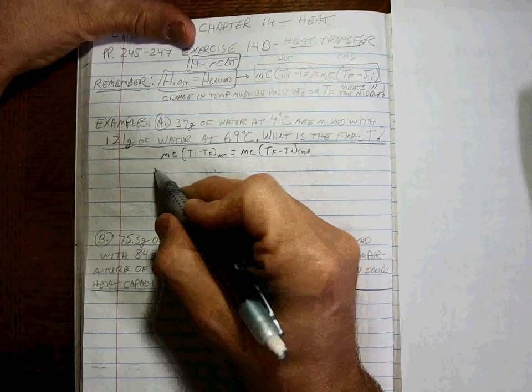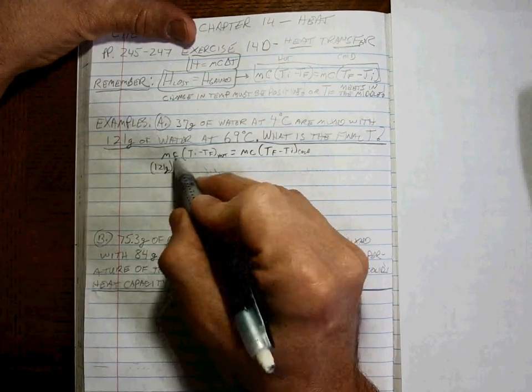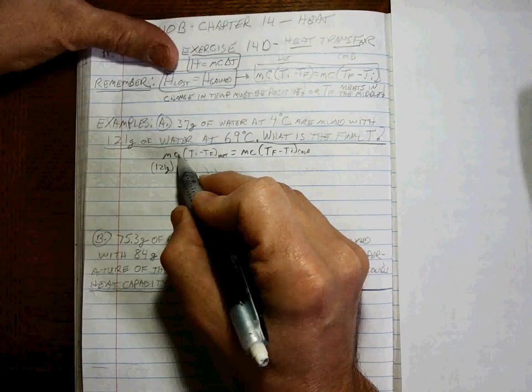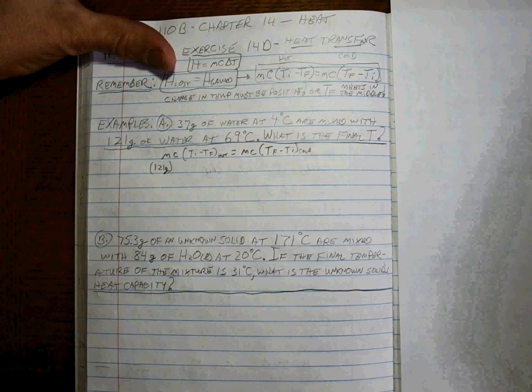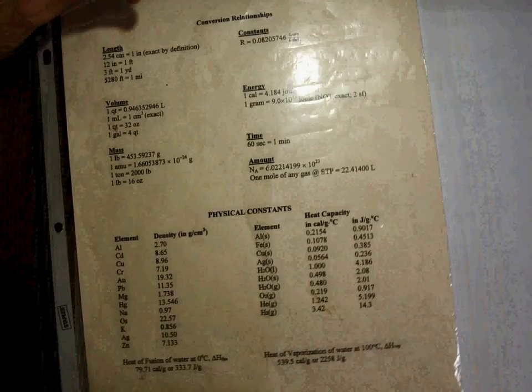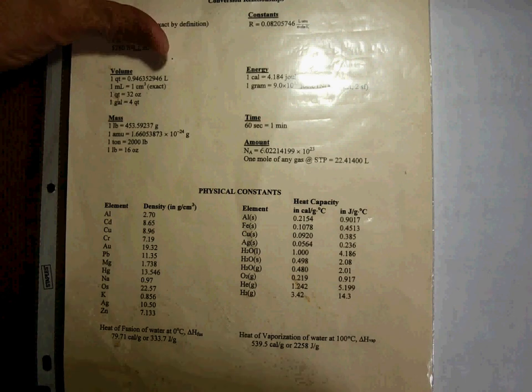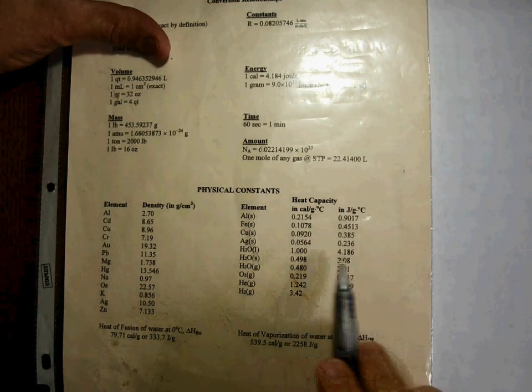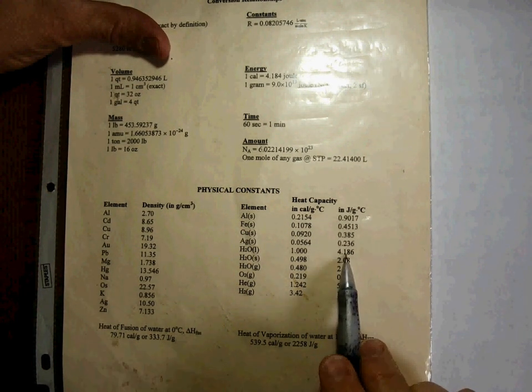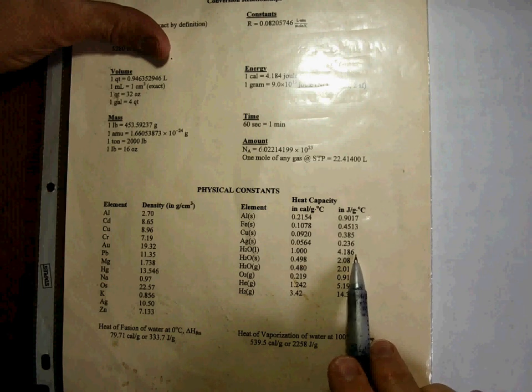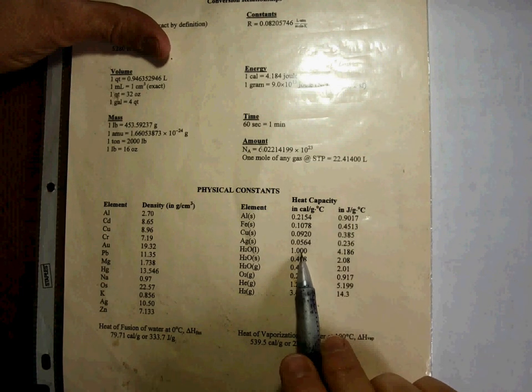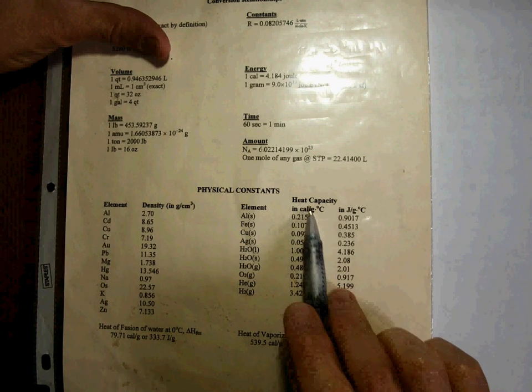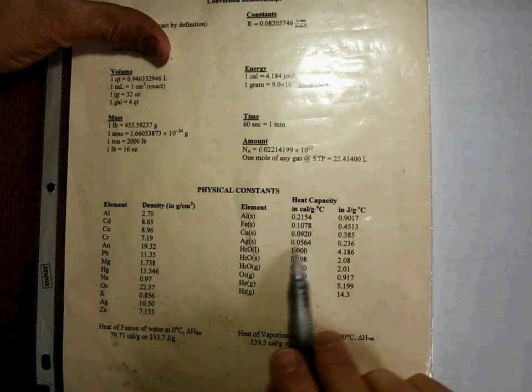And remember, the final temperature meets in the middle. So let's put in what we know. Since this is the hot, it's going to be losing. So 121 grams, this is water liquid. So because this is liquid water, you can use whatever heat capacity that you want for H2O liquid. You can either use 4.186 or actually that should be 4.184 joules per gram per degree C.